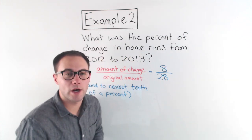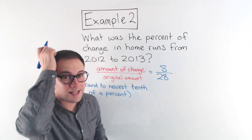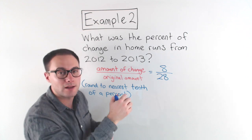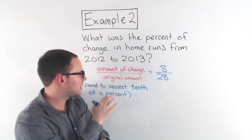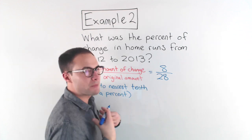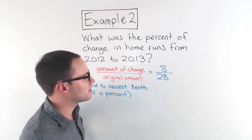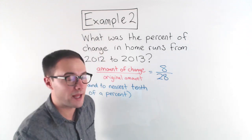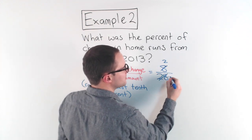So we have eight over 28. We need to convert that to a percent, and we can round to the nearest tenth of a percent. To make things easier, I'll simplify first. Four is a common factor of eight and 28, so that becomes two over seven. Now I need to convert two-sevenths into a percent, starting by changing it to a decimal with long division.